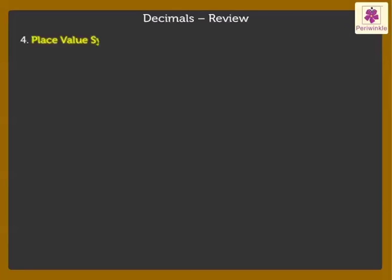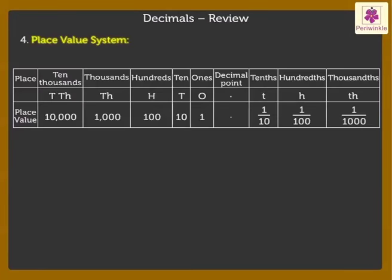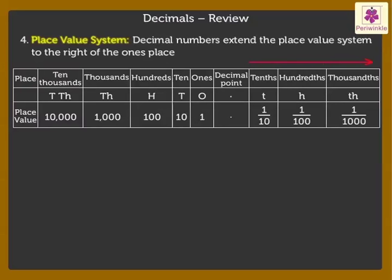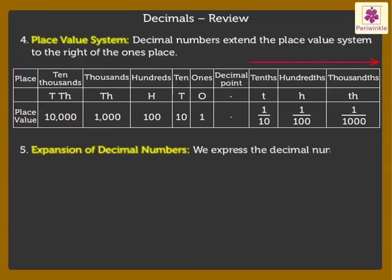Place value system: The table here shows that decimal numbers extend the place value system to the right of the ones place. Expansion of decimal numbers: We express the decimal number in the expanded form by writing the sum of the value of each digit in the given number.